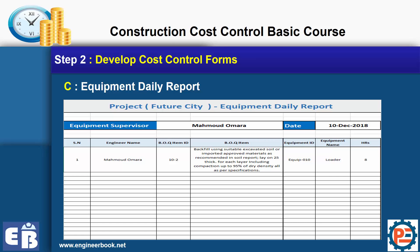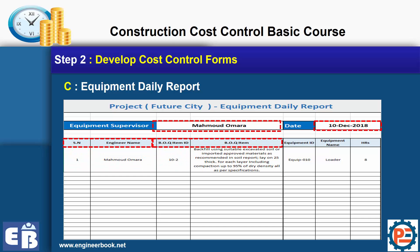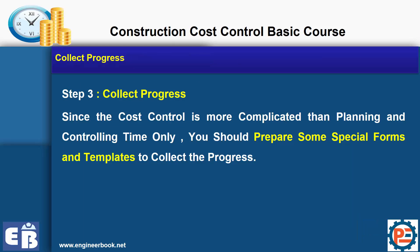For equipment, we also need to know what the equipment hours were for each item. So we need to know the engineer who executed this item and how many hours the equipment was involved. By collecting the progress and creating the forms, we can collect the progress data. All these processes are very, very simple — you will be surprised how simple it is.